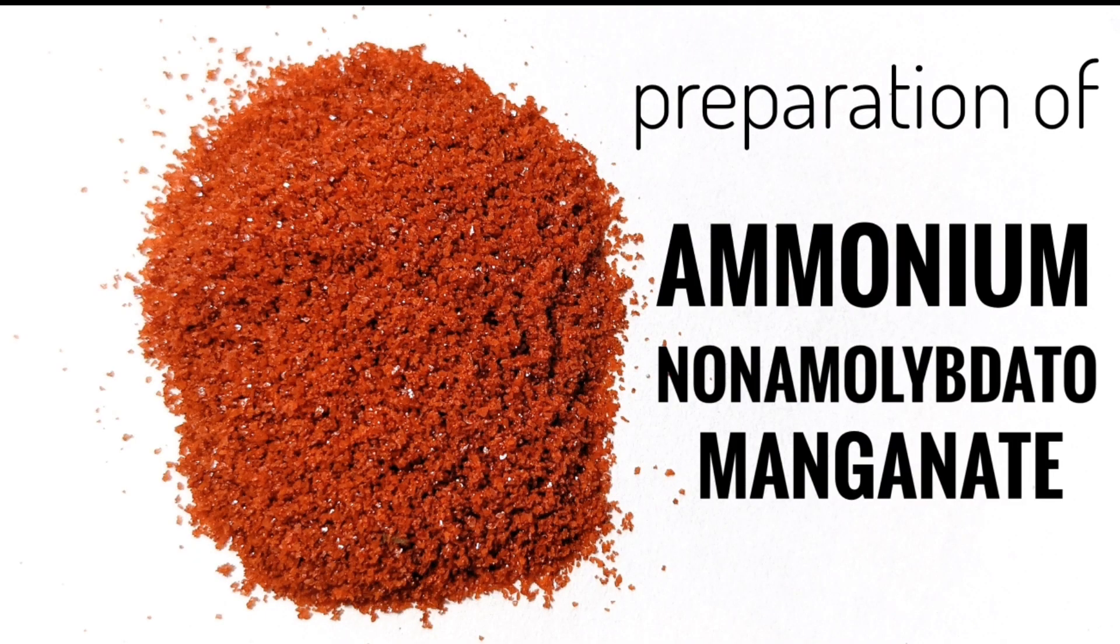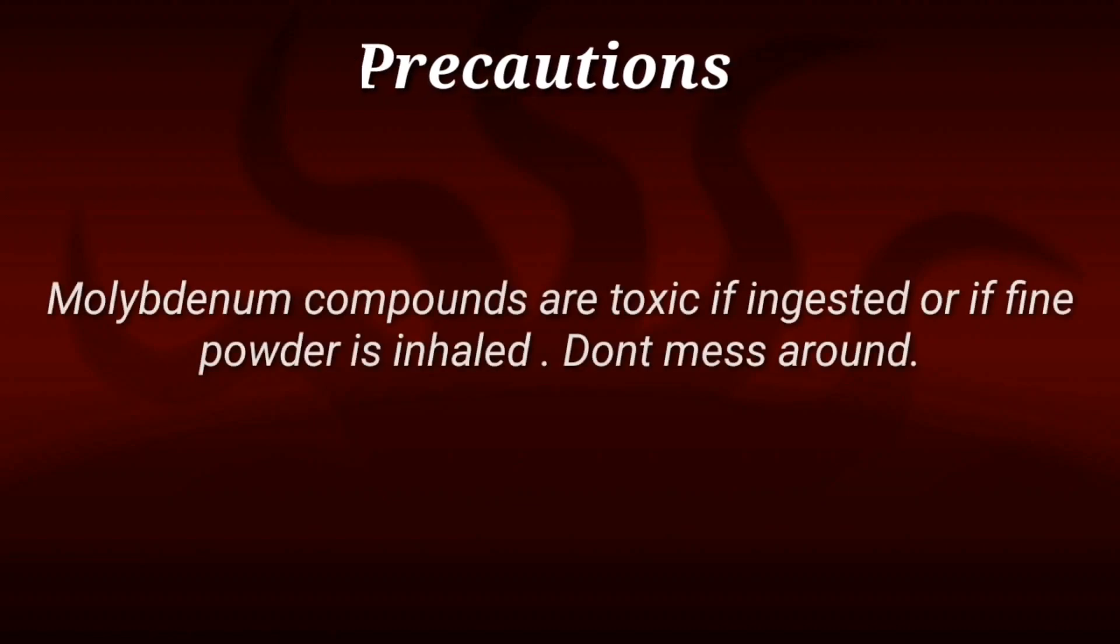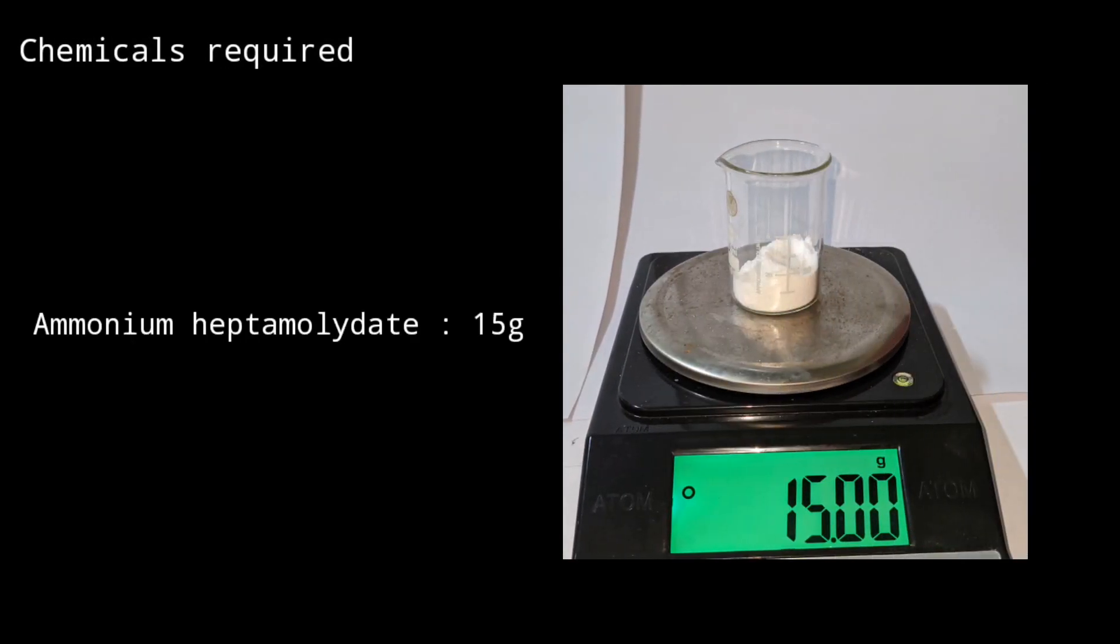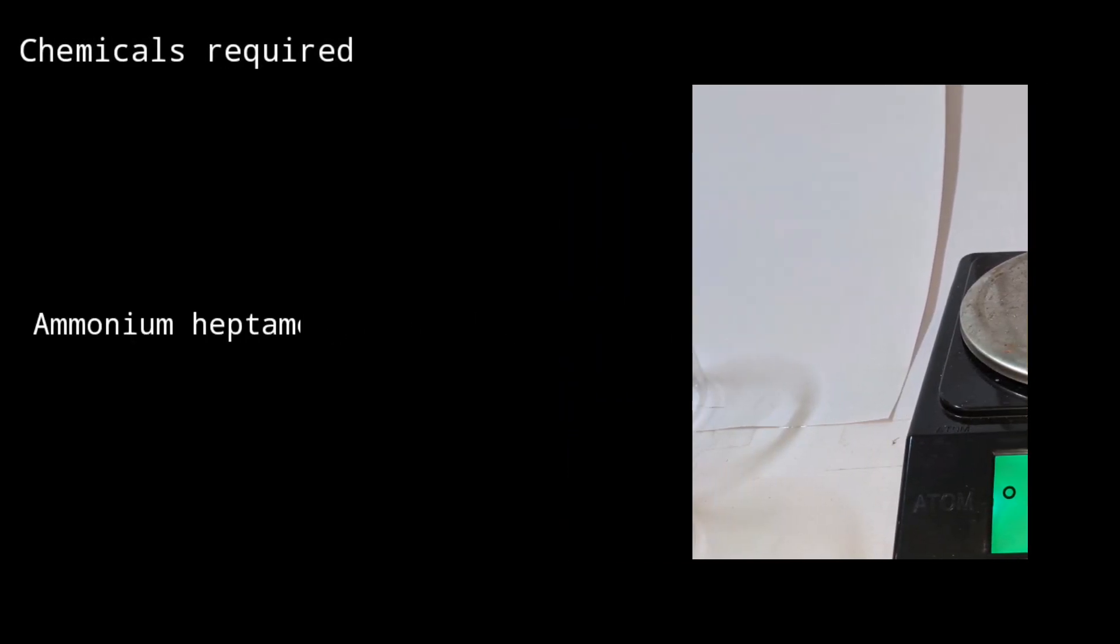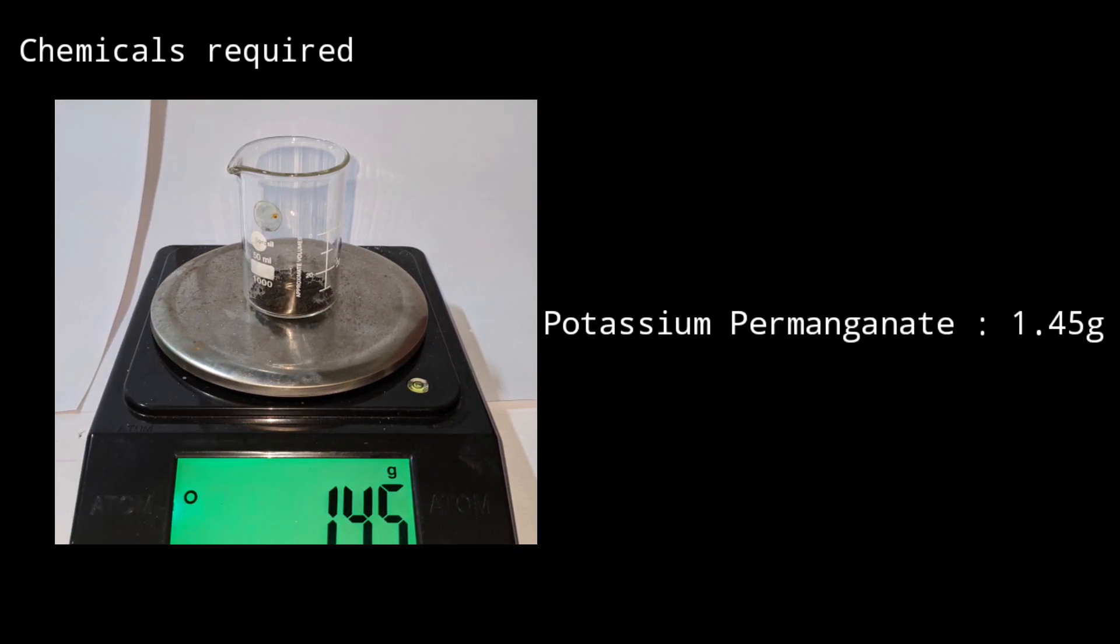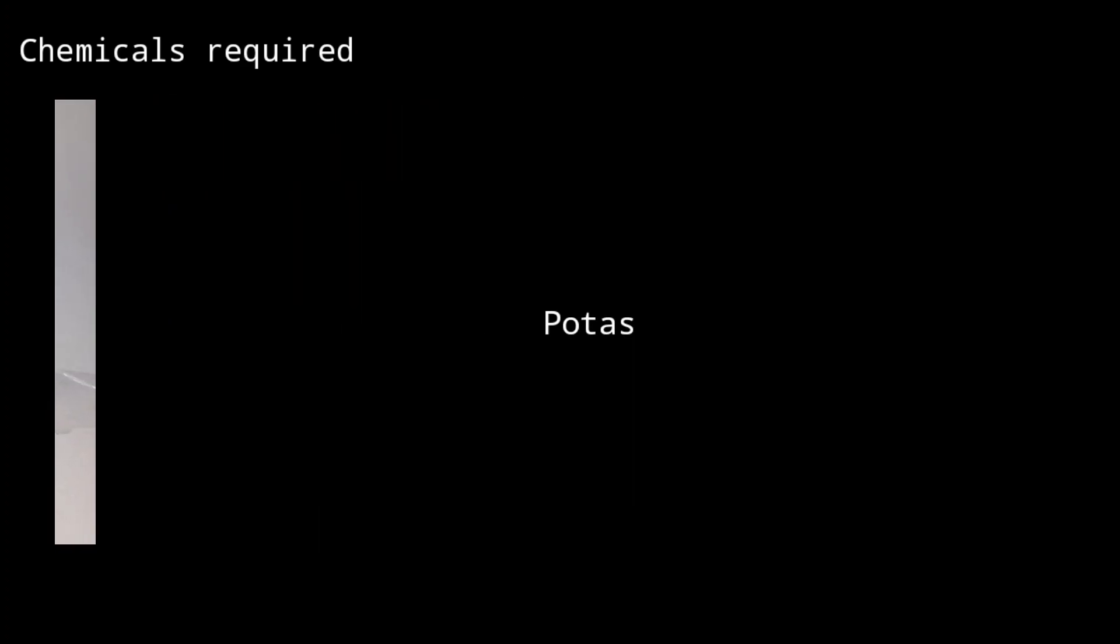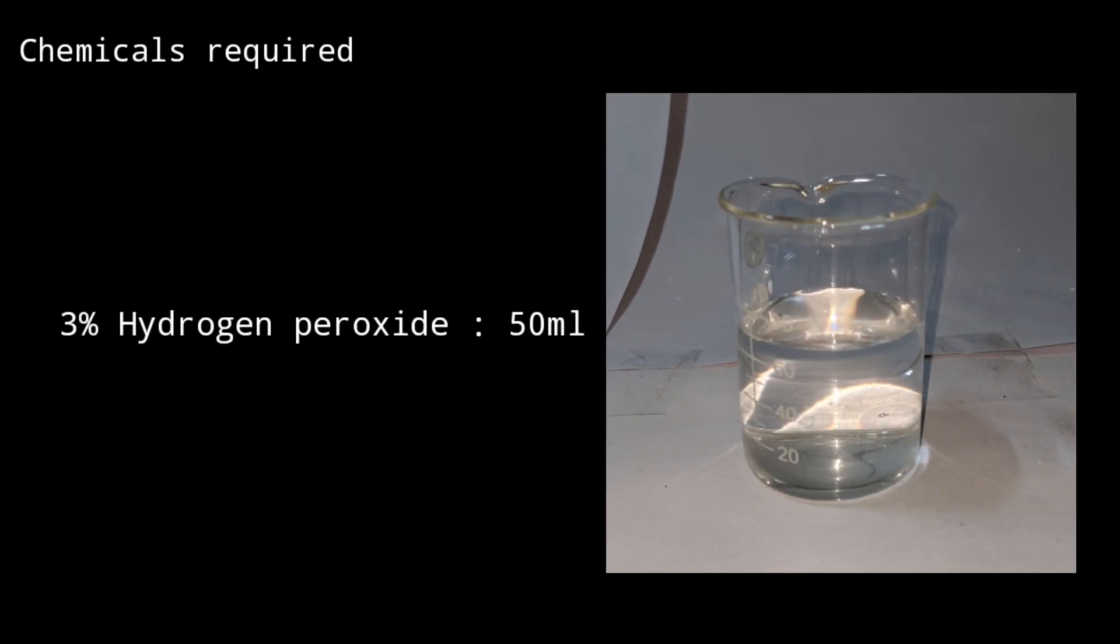Hello friends, in this video we will be making the polyoxometallate compound ammonium nona molybdomanganate. Chemicals required for this experiment are 15 grams of ammonium heptamolybdate, 1.45 grams of potassium permanganate, and 50 milliliters of 3% hydrogen peroxide solution.